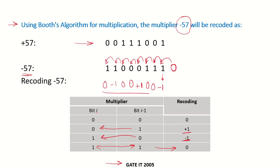So this is the final recoding of minus 57: 0, minus 1, 0, 0, plus 1, 0, 0, and minus 1.